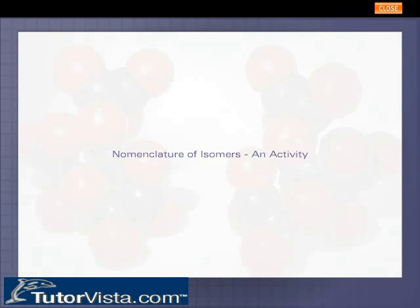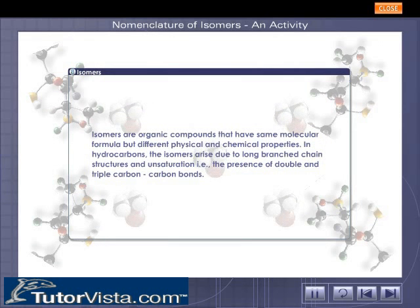Nomenclature of Isomers, an Activity. Isomers are organic compounds that have same molecular formula but different physical and chemical properties. In hydrocarbons, the isomers arise due to long branched chain structures and unsaturation, i.e., the presence of double and triple carbon-carbon bonds.